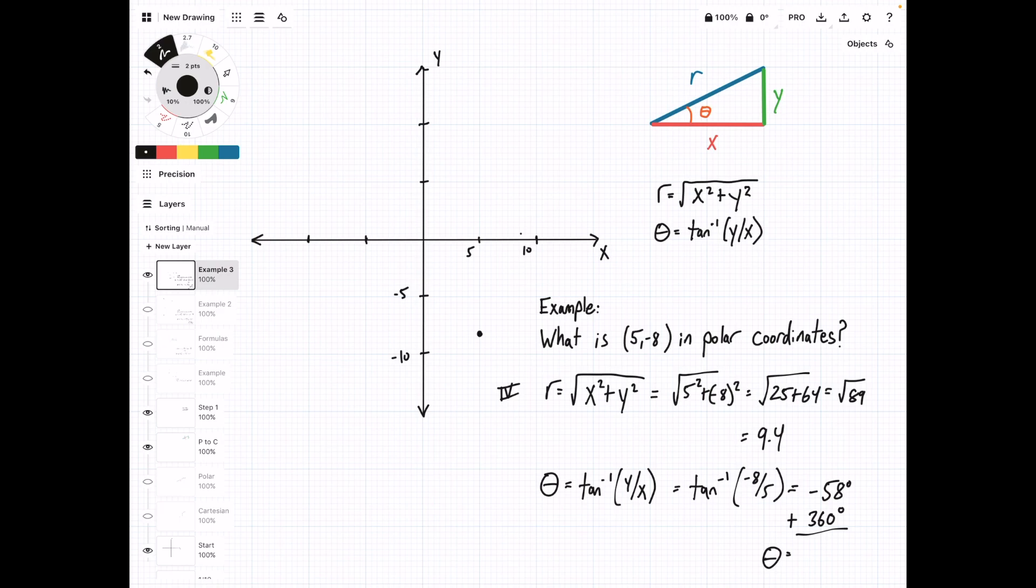So when you do that, you get theta is equal to 302 degrees. And so now we will define it using this counterclockwise notation. And again, we have r equal to 9.4, and then this big angle here is going to be 302 degrees.